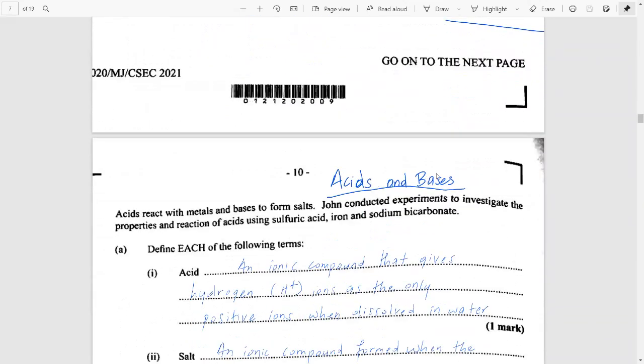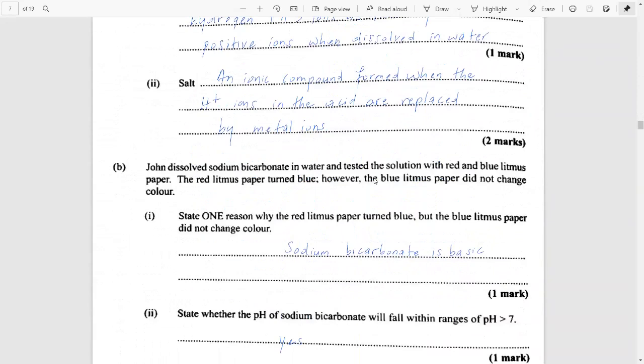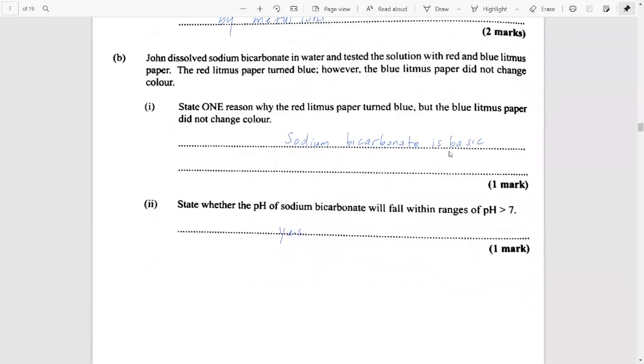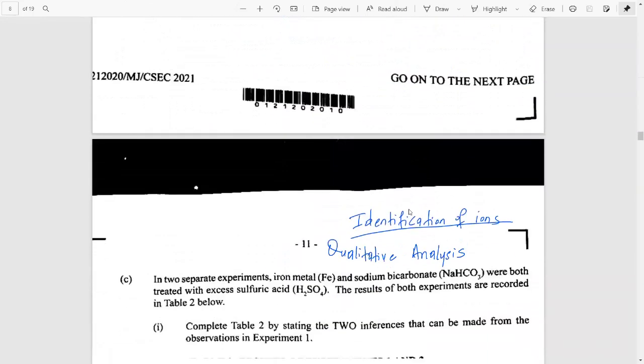Then next, you had your acids and your bases. You were asked to give your definitions of the acid and the salt. We did cover this when we looked at our acids and bases and our salts in our marathon. Really hoped you got a chance to see that. And then John tested sodium bicarbonate, which turned red litmus blue. That suggests that it was basic and that it would have a pH of greater than 7.